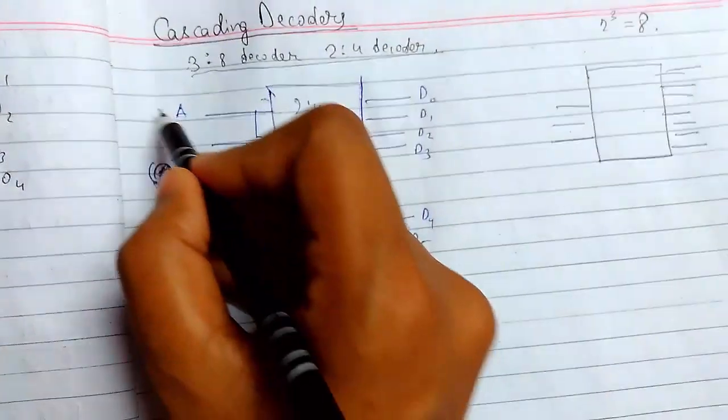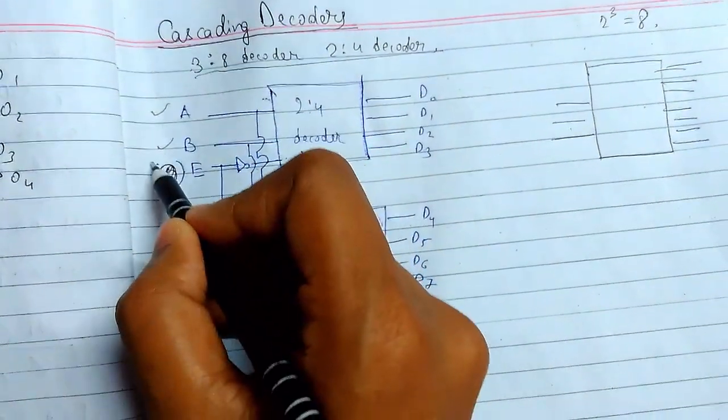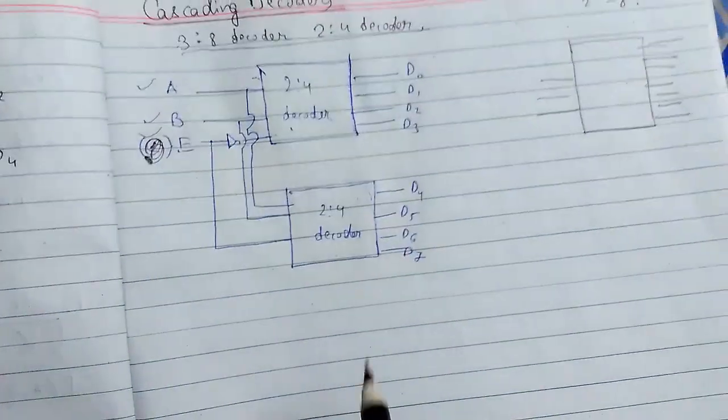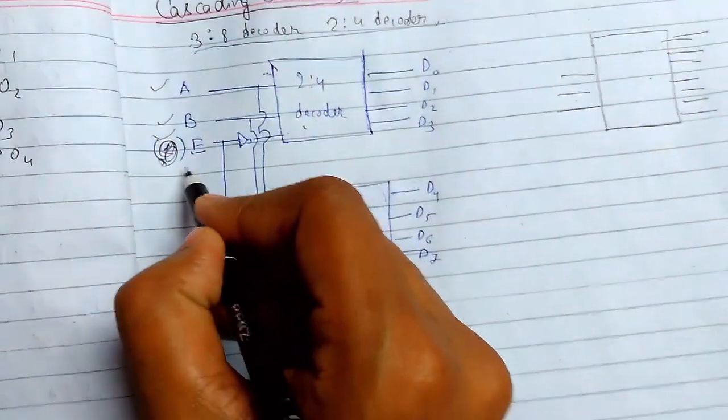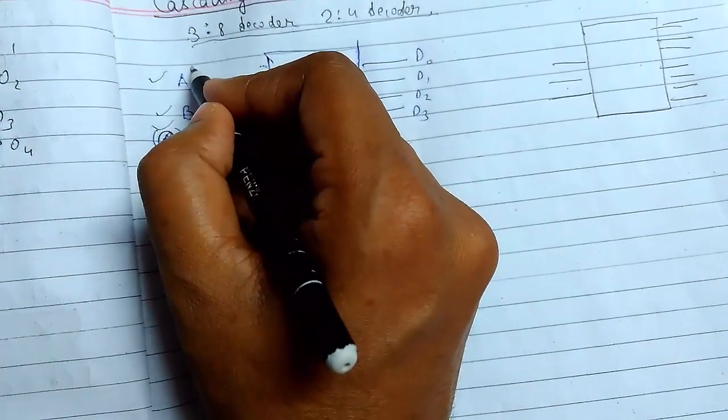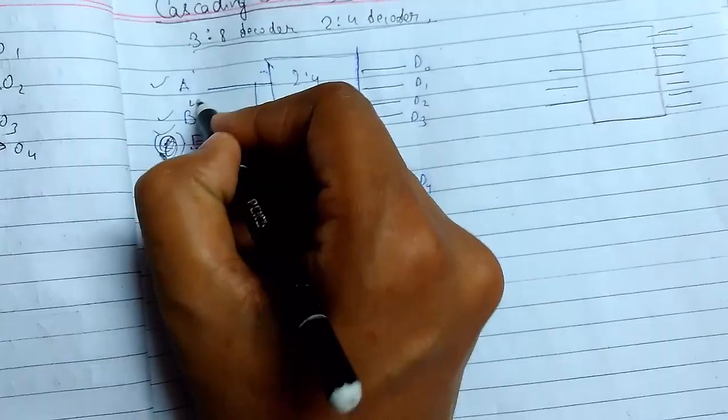We will be using A, B and C. Since we are not having C, we will use the enable which we already had. This will be the MSB, this will be the second next bit and this will be the LSB.